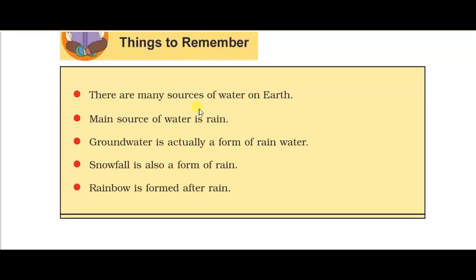Key points: There are many sources of water on earth. The main source of water is rain. Ground water is actually a form of rain water. Snowfall is also a form of rain water. Dew point water is also a form of rain.